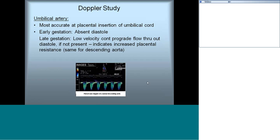There are several Doppler studies needed for completion of fetal echo — some prognosticating for placental insufficiency and some indicating associated problems. The umbilical artery Doppler has its own course from placenta to fetus and should be sampled at both points — closer to the baby and closer to the placenta — though placental insertion is more accurate. There is a prominent systolic flow and continuous prograde diastolic flow during later gestation. In earlier gestation, absence of diastolic flow is normal, but in later gestation it indicates increased placental resistance.